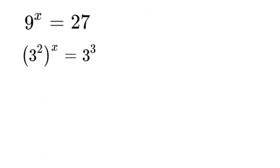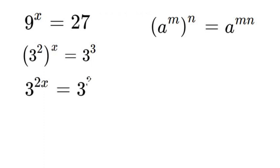So what we're going to do here is use an exponent property. So if we have a to the m to the n, that is the same thing as a to the power of m times n. It's kind of a tongue twister. But because of that, we can rewrite this as 3 to the power of 2x is equal to 3 cubed.